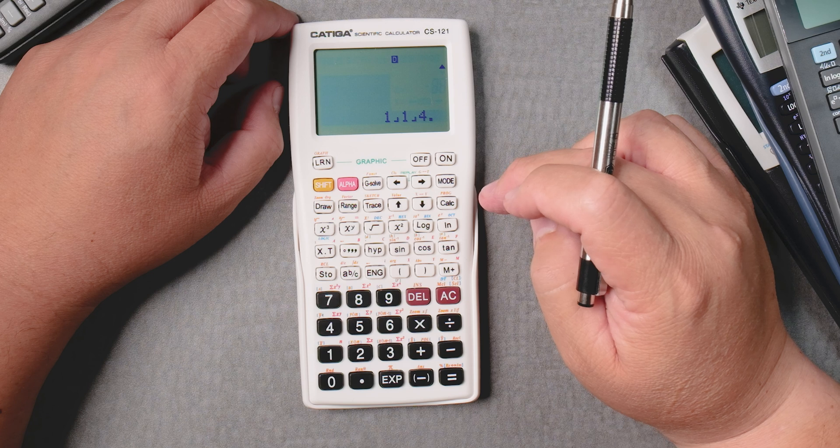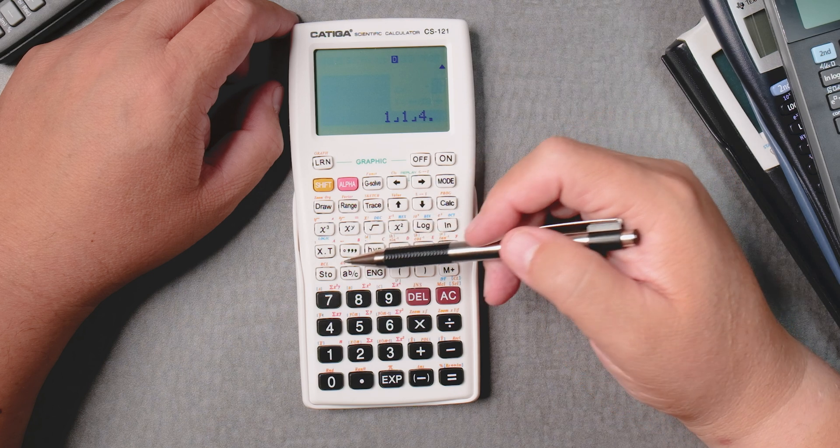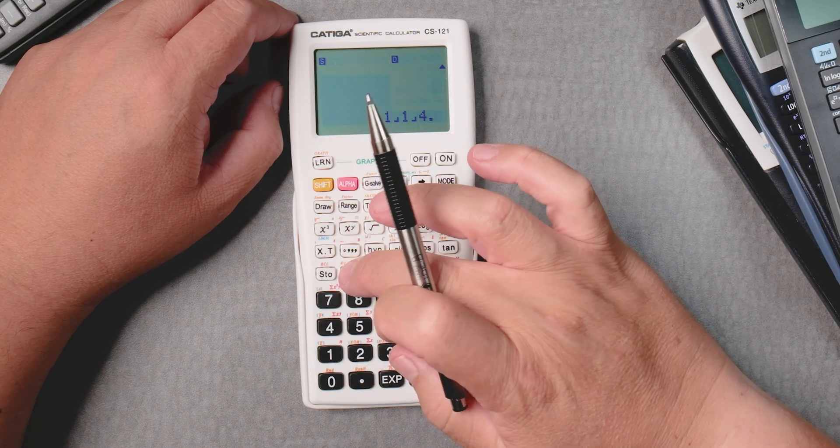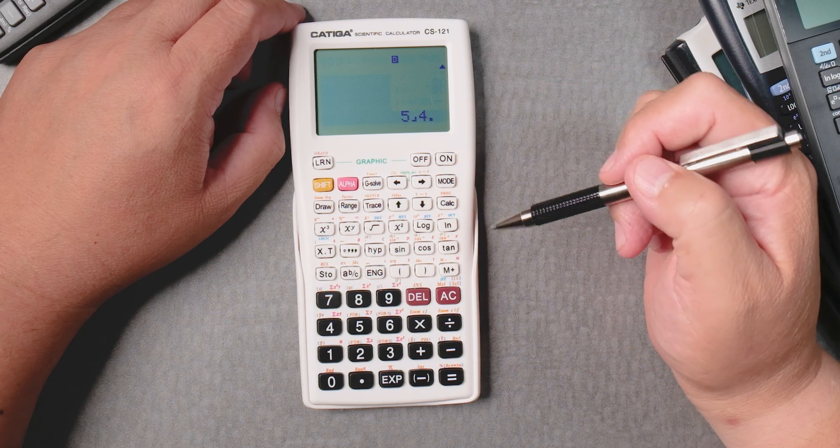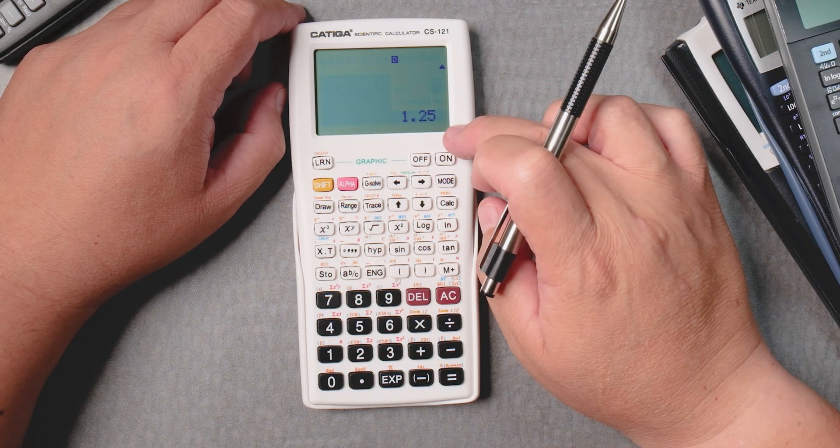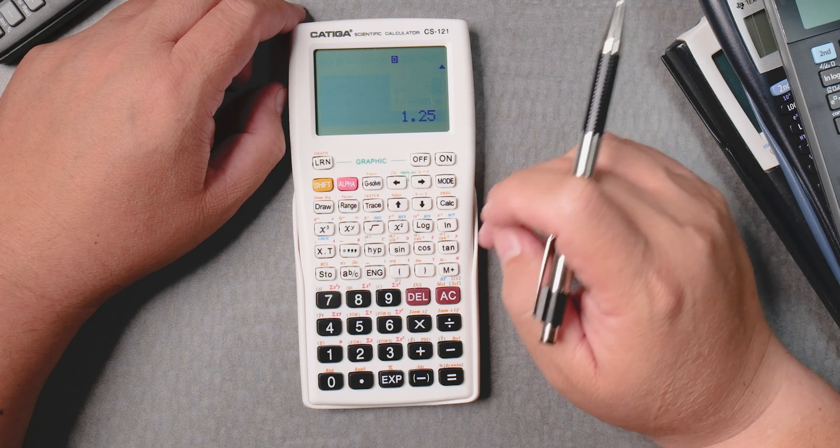Let's press ABC again. Let's see. Ah, it's shift ABC. Sorry about that. The printing is really tiny. 5/4. And if you press ABC, it gives you the decimal version.